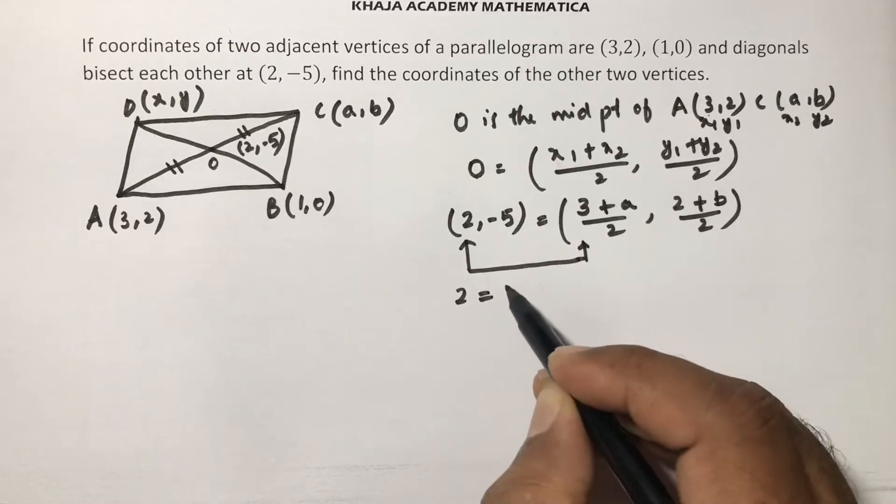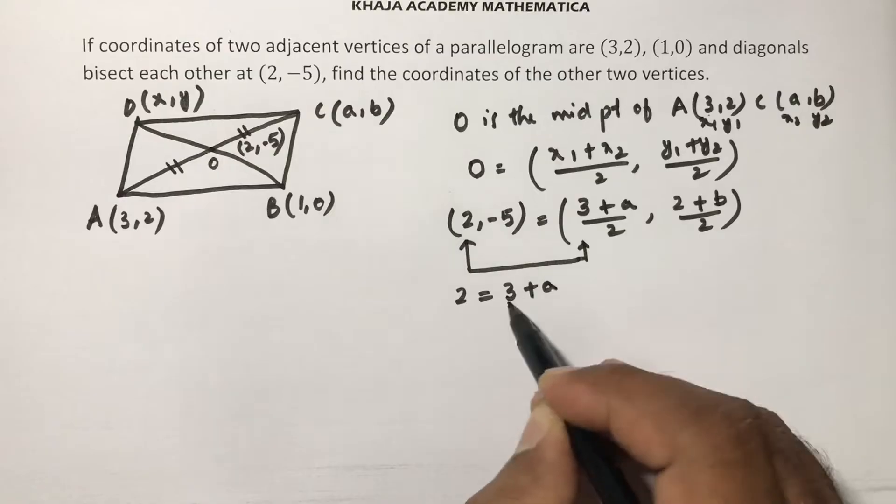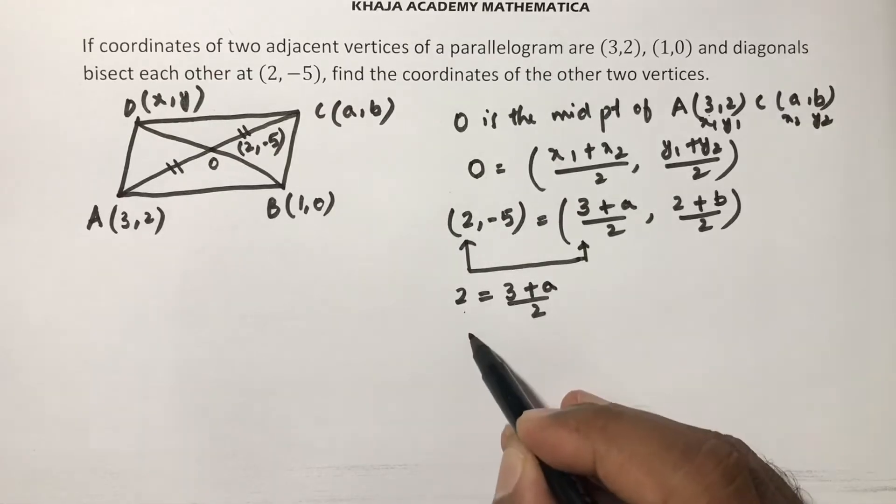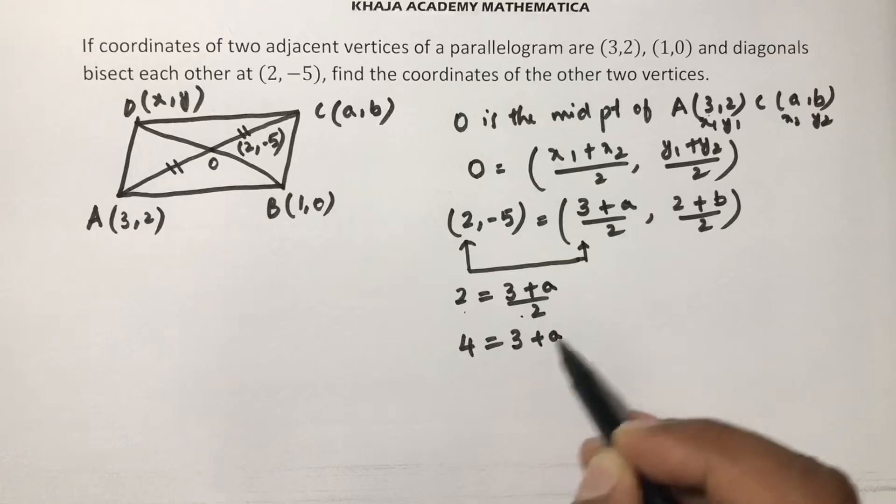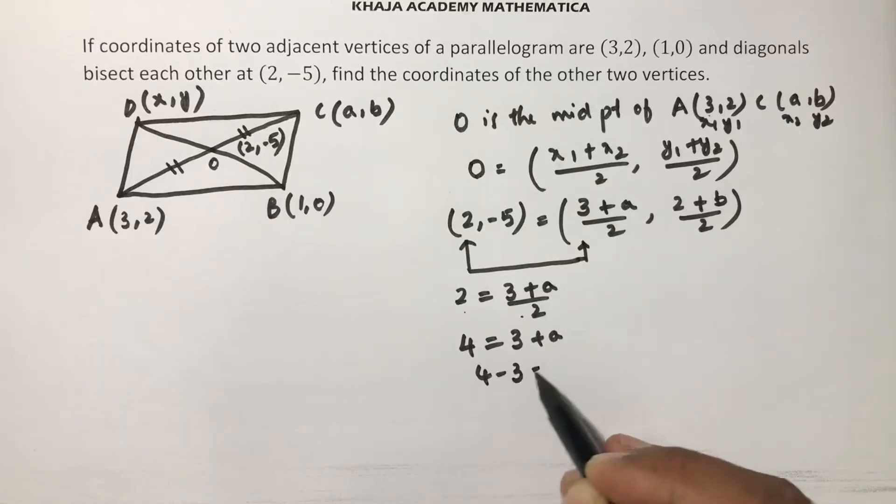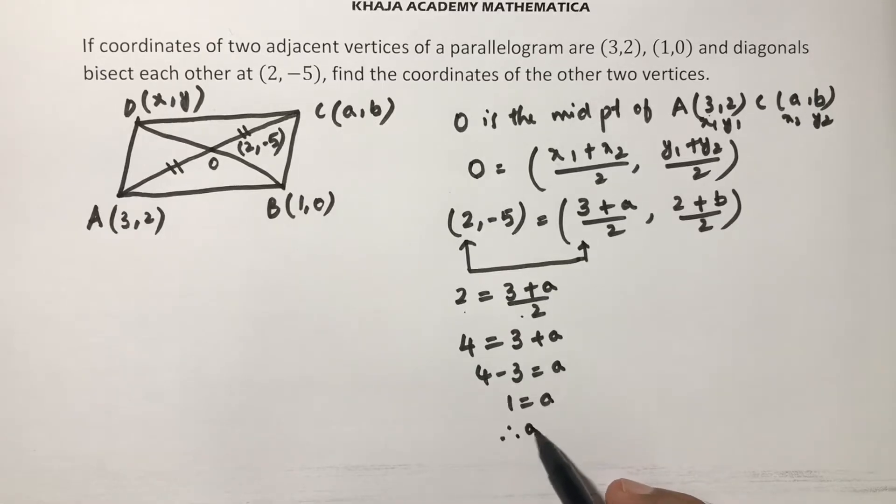So 2 equals (3+a)/2. If you cross multiply, 2 times 2, 4 equals 3+a, 4 minus 3 equals a. So 1 equals a, therefore a equals 1.